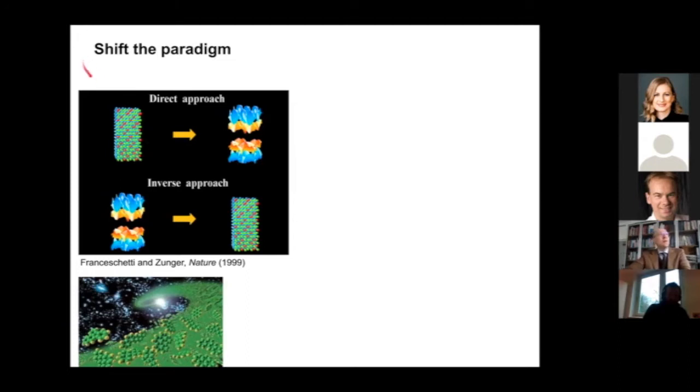Conventionally you would mimic the experiment. The conventional physics-based approach is to study a system and then predict its properties and processes, and then you can falsify things and compare to experiment. That's what proper science does, falsification. You would do this in the direct approach.